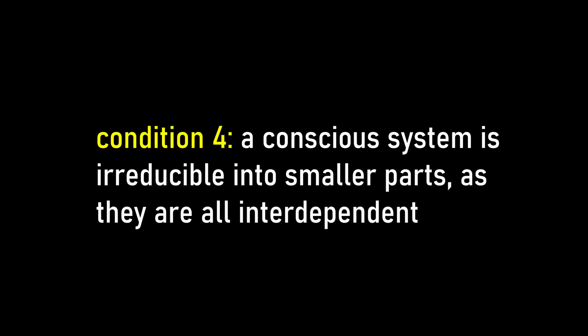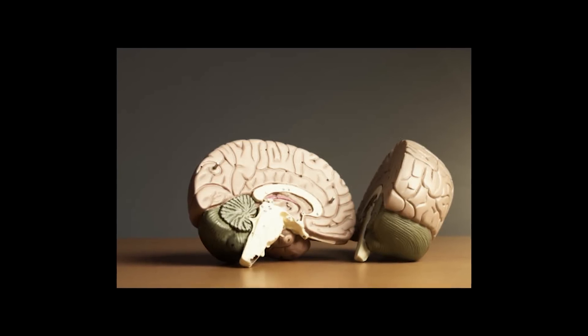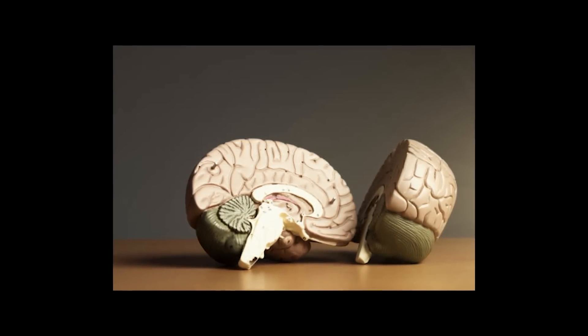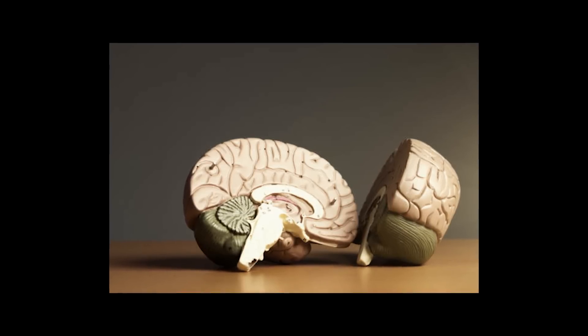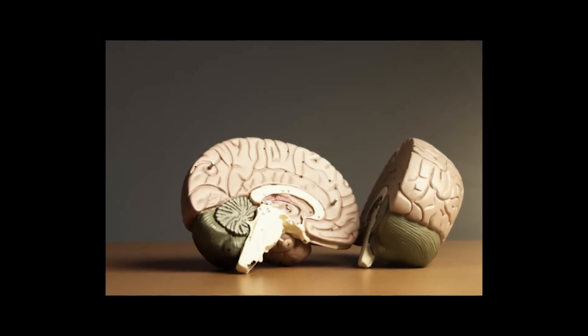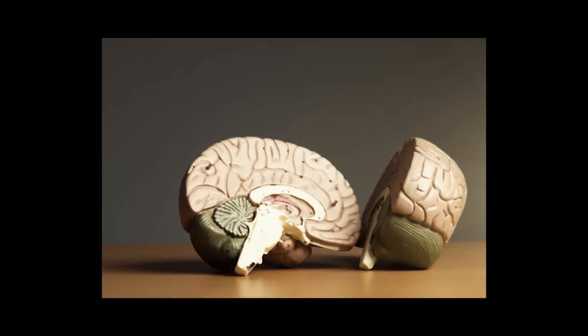Condition number four, a conscious system is irreducible into smaller parts because they are all interdependent on each other. If you cut a functioning brain in half, there will necessarily be a loss of information, even though you still have both halves of the brain, because you would have destroyed a lot of connections between both halves.